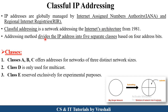In the previous session we discussed about different IPv4 and IPv6 addresses. All these IP addresses are divided into five separate classes based on four address bits or based on their characteristics. These five separate classes are called Class A, B, C, Class D, and Class E. Now let's discuss all these classes in detail.